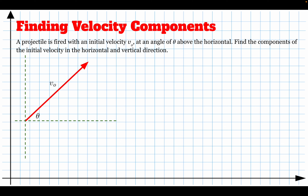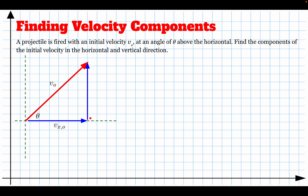The first skill is how to find velocity components. If I fire a projectile at some angle theta above the horizontal, my launch velocity is not the initial velocity in the y or x direction. We need to find the components of this vector to figure out how fast it's moving horizontally and vertically. We call these the velocity in the x direction initial and the velocity in the y direction initial.